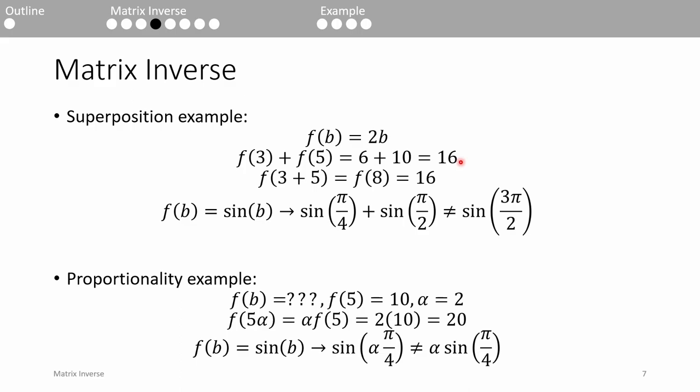But instead of evaluating both f of 3 and f of 5, superposition allows us to evaluate f of 3 plus 5, and we'll get the same answer. Exploiting superposition allowed us to only have to evaluate f of b once, not twice.